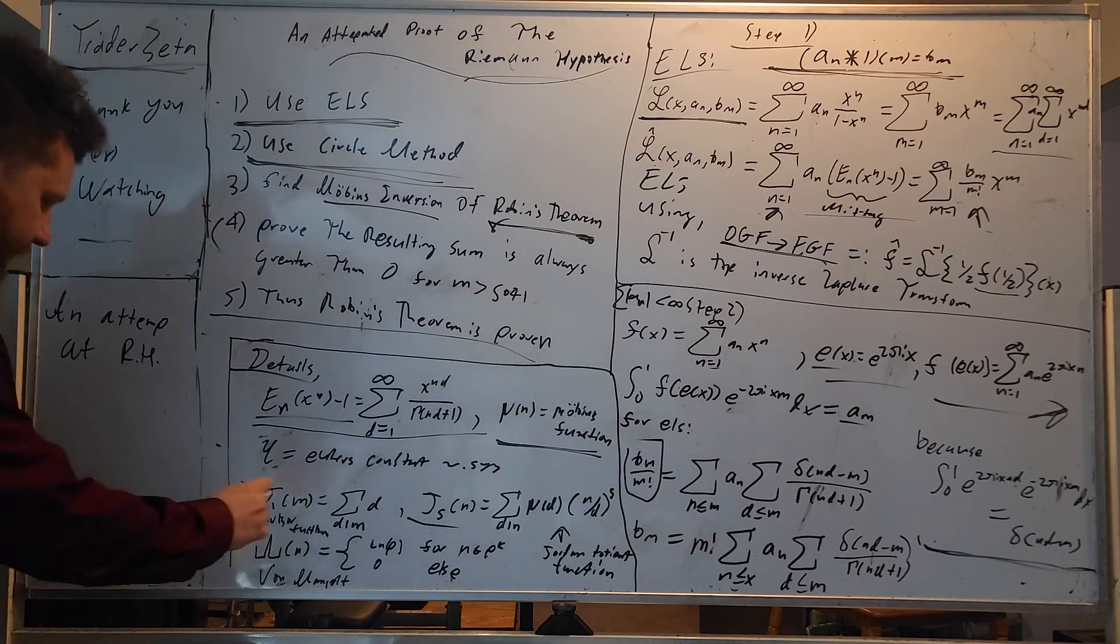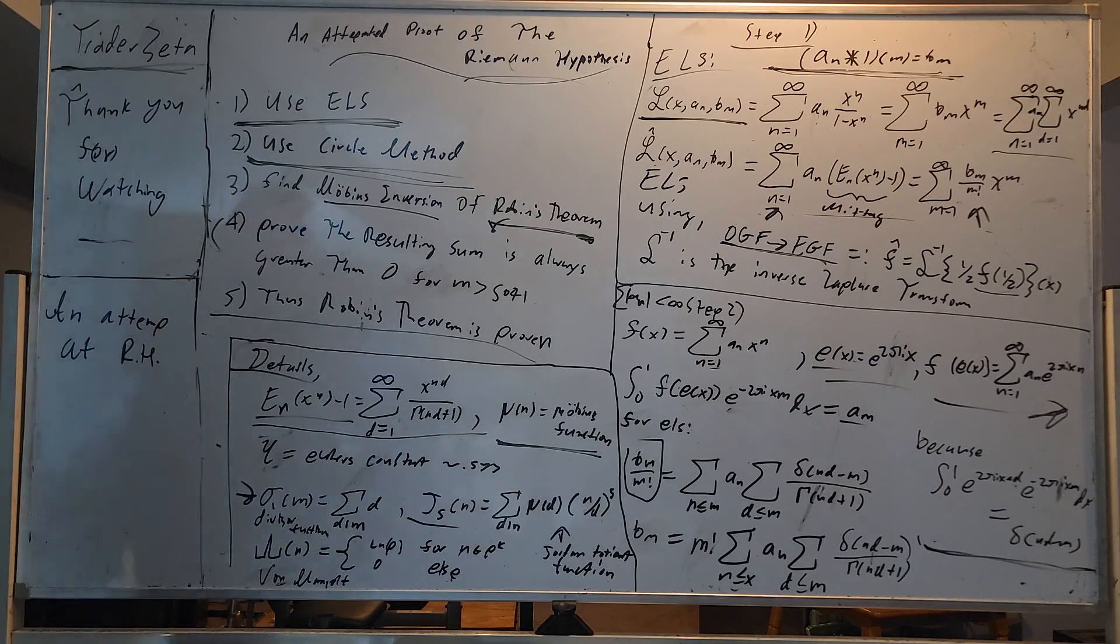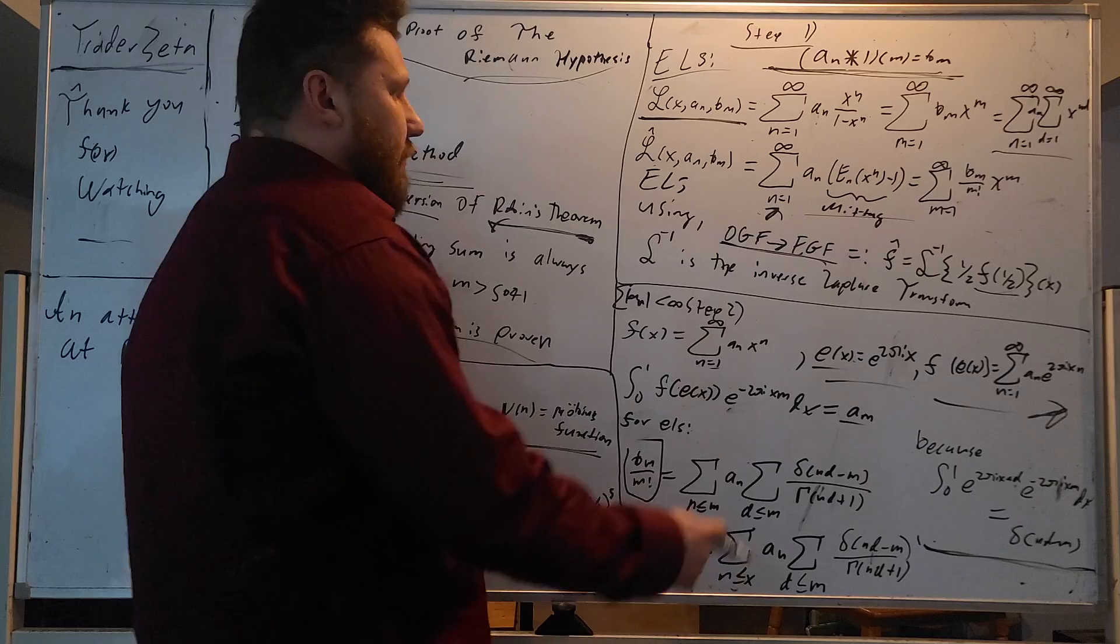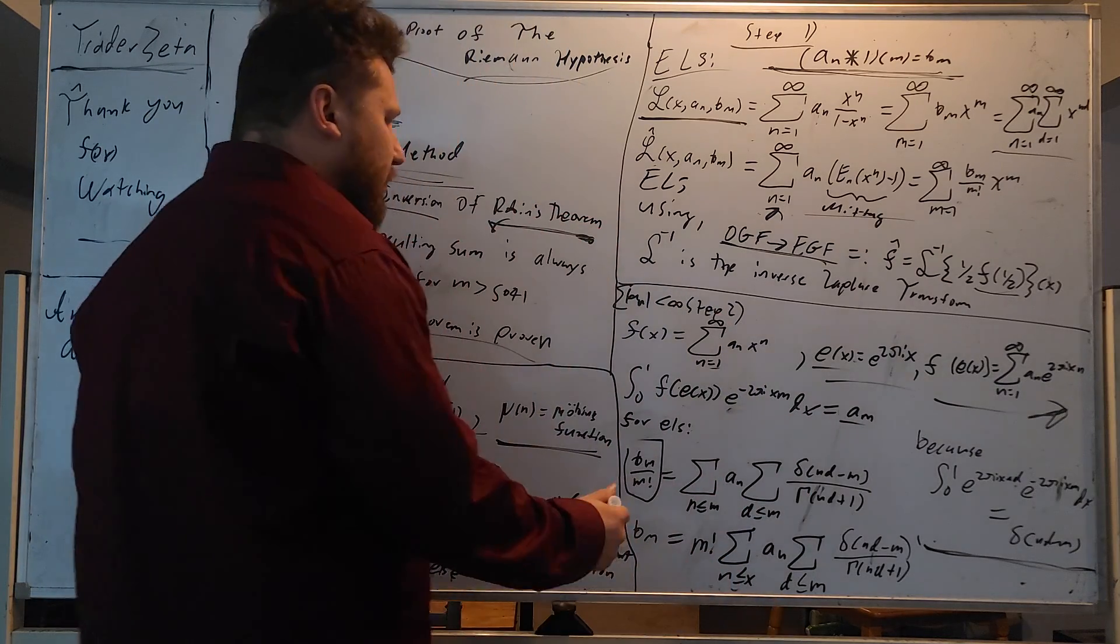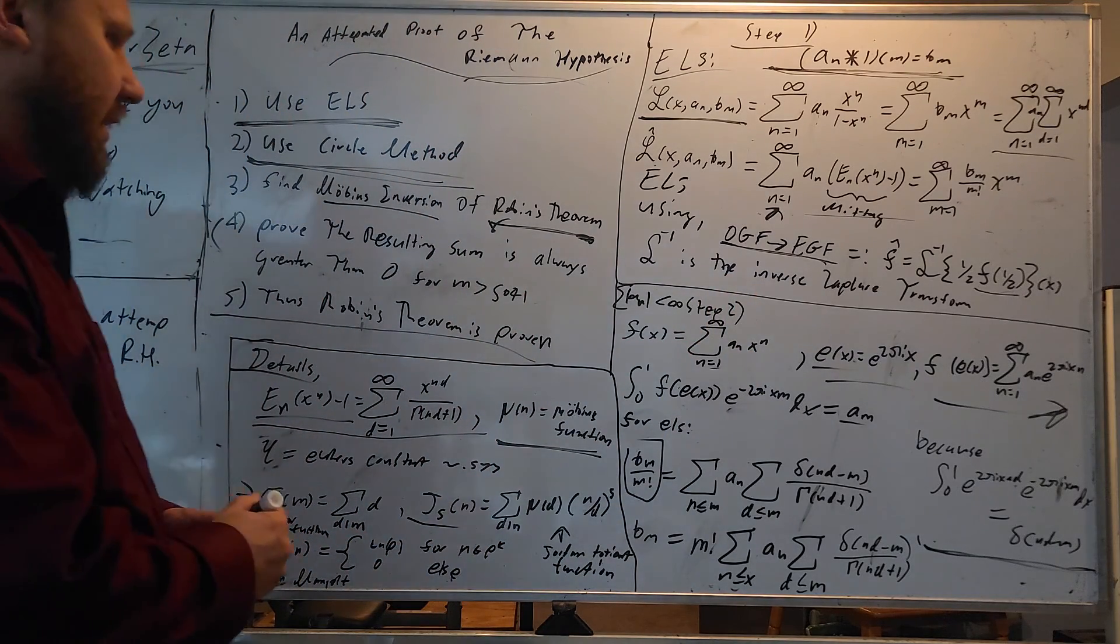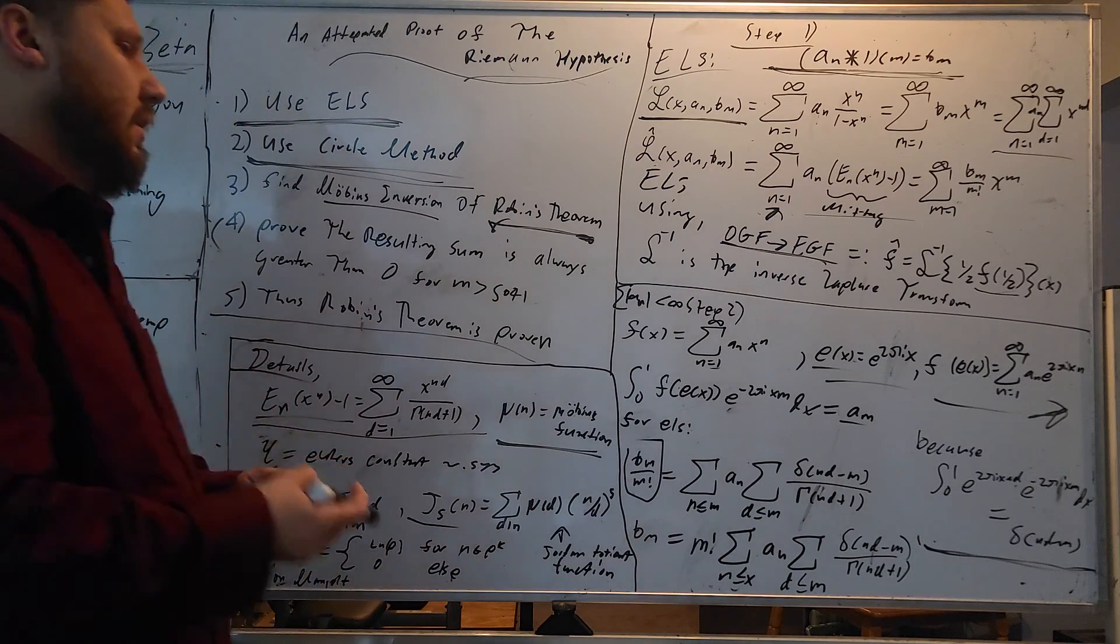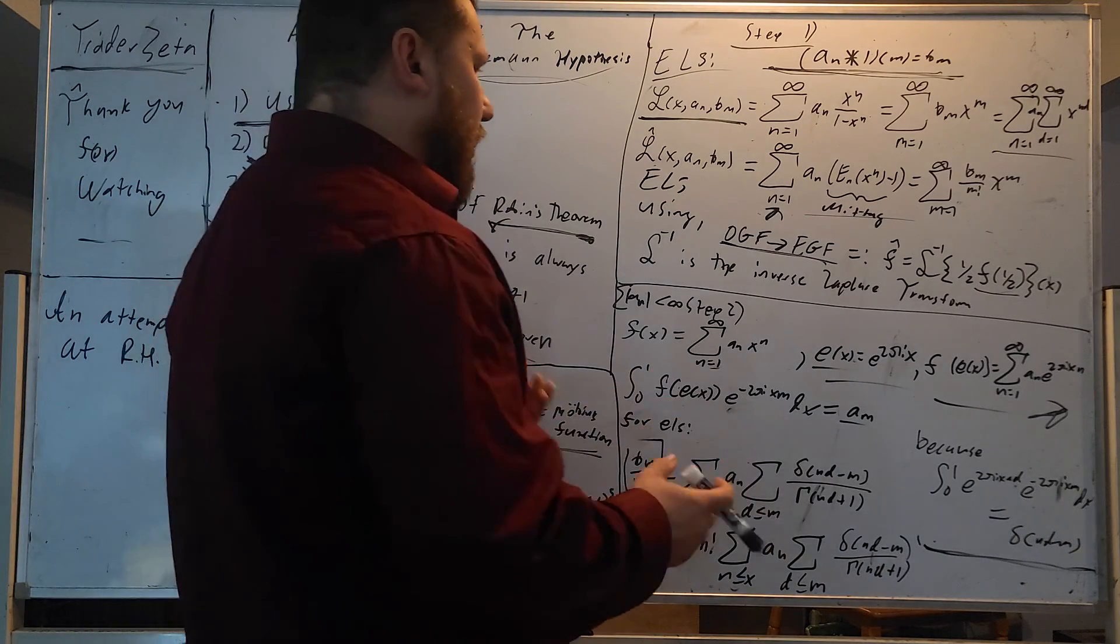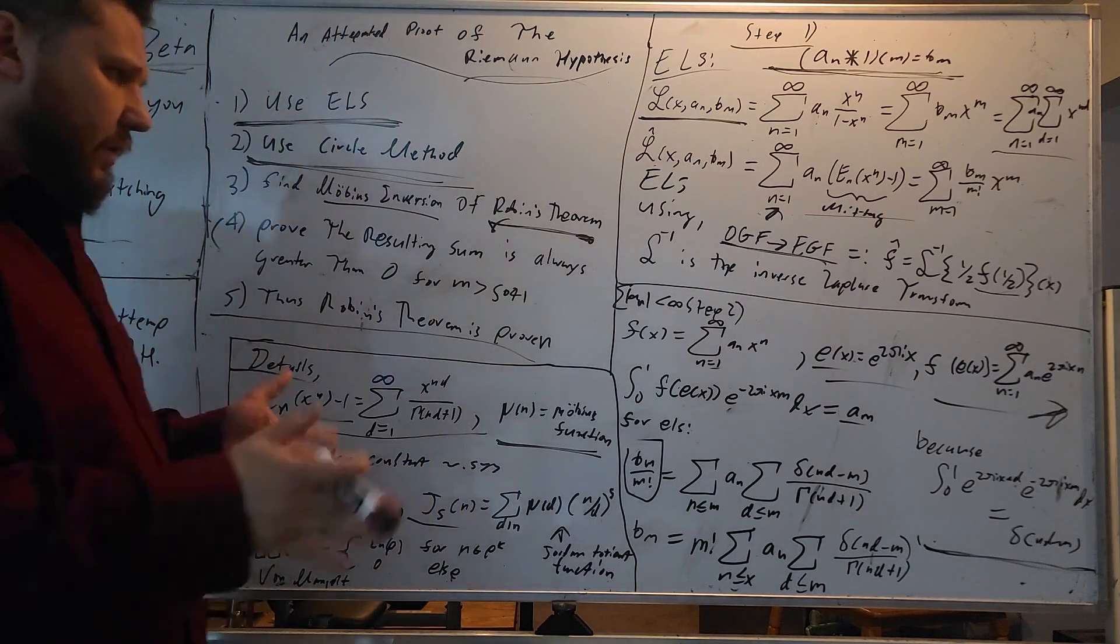And you might ask, why do such a thing? It seems like a lot of extra work to transform things this way. Well, the question is that if we have b sub m on its own, the series is kind of hard to deal with because, say for example, b sub m is the divisor function. The divisor function is not monotone by any stretch of the imagination.